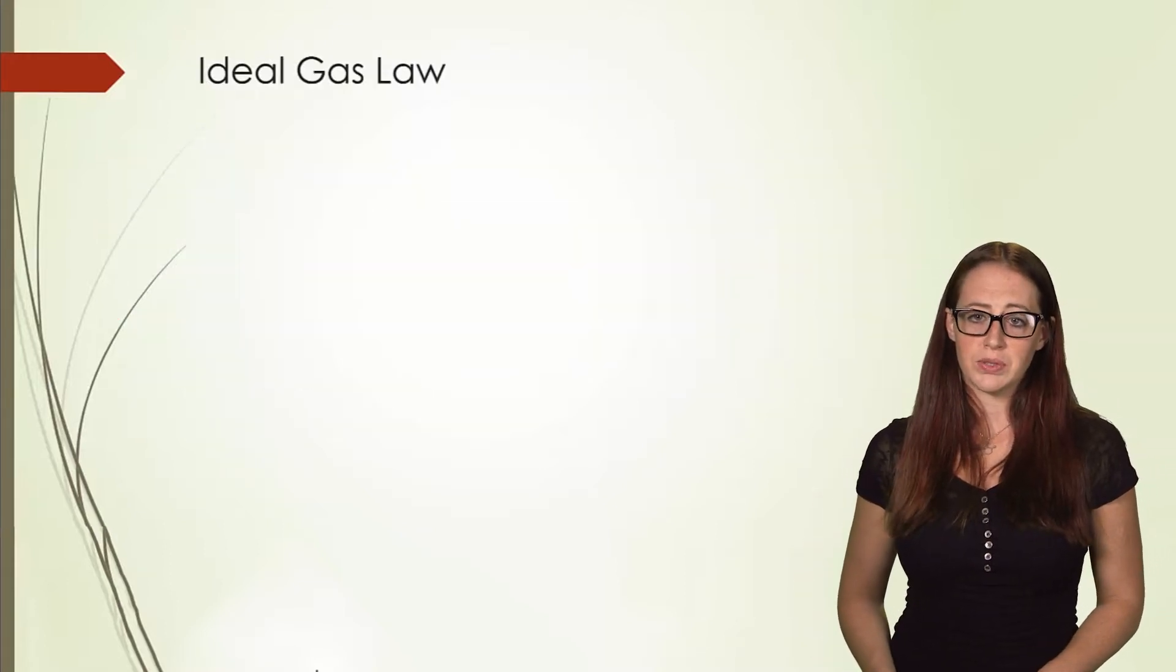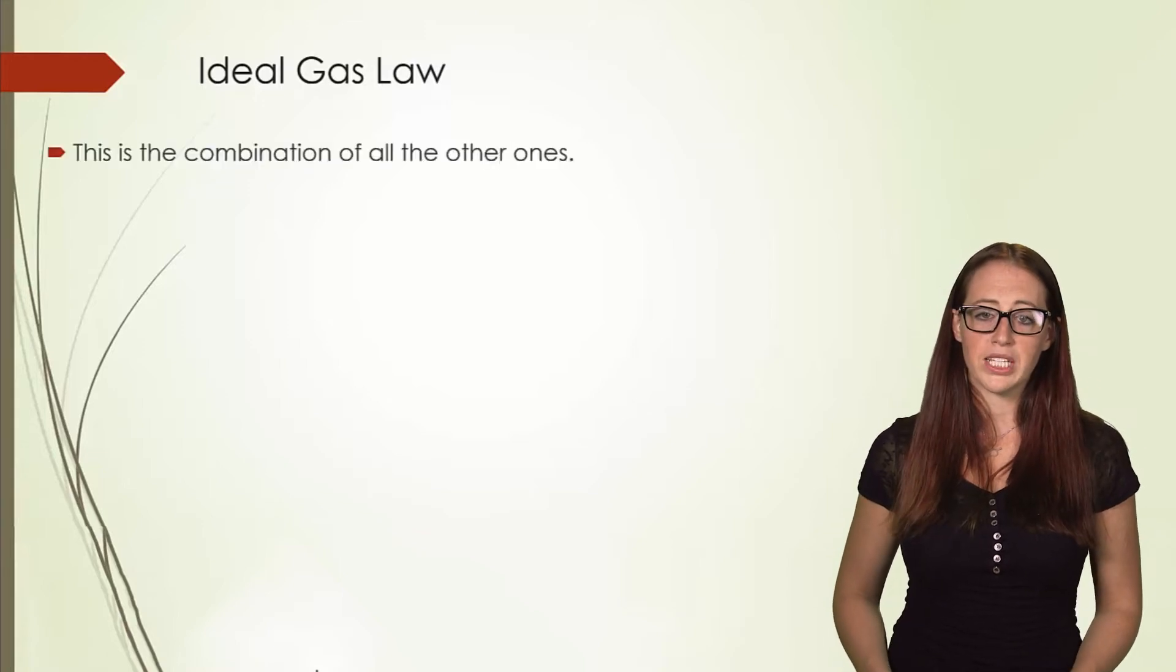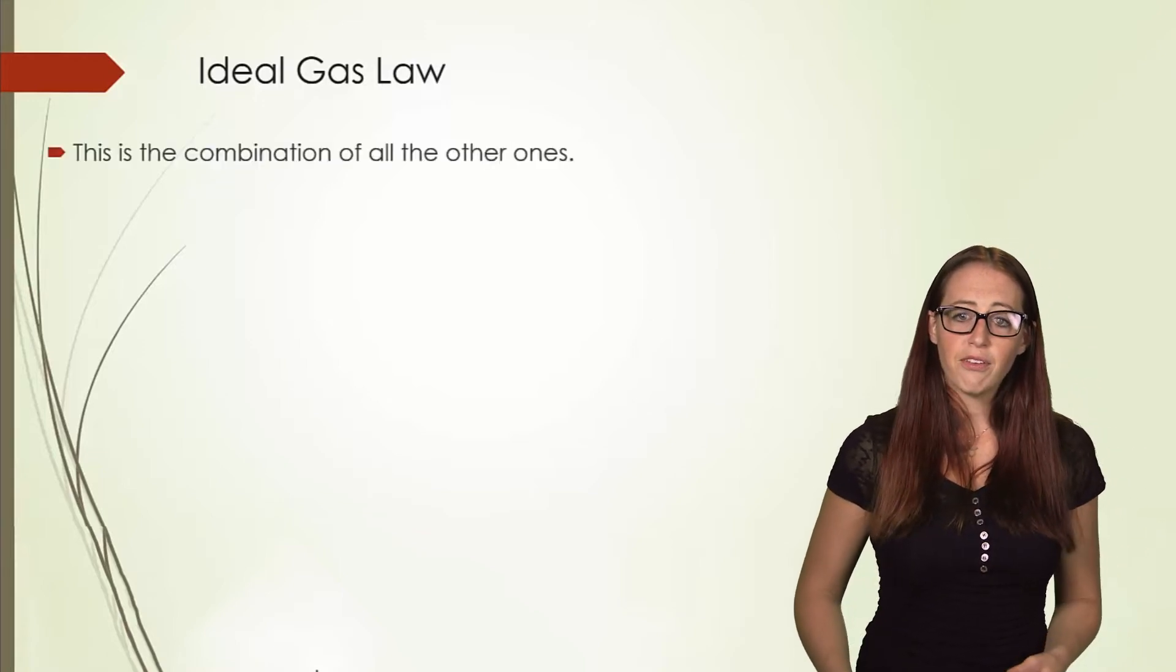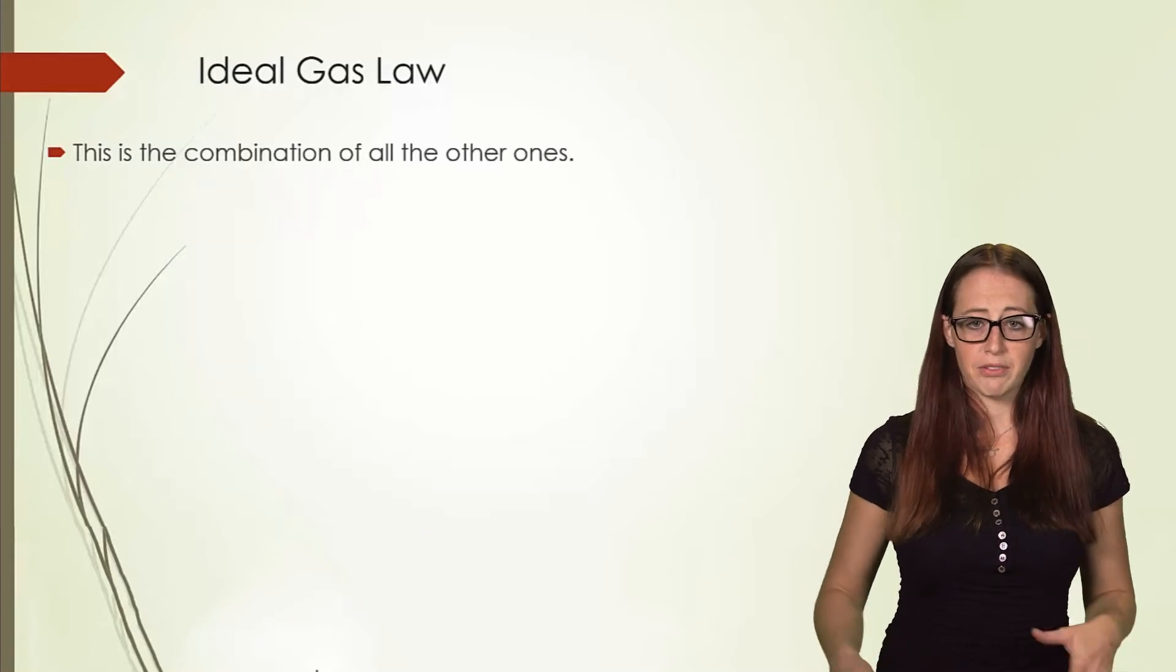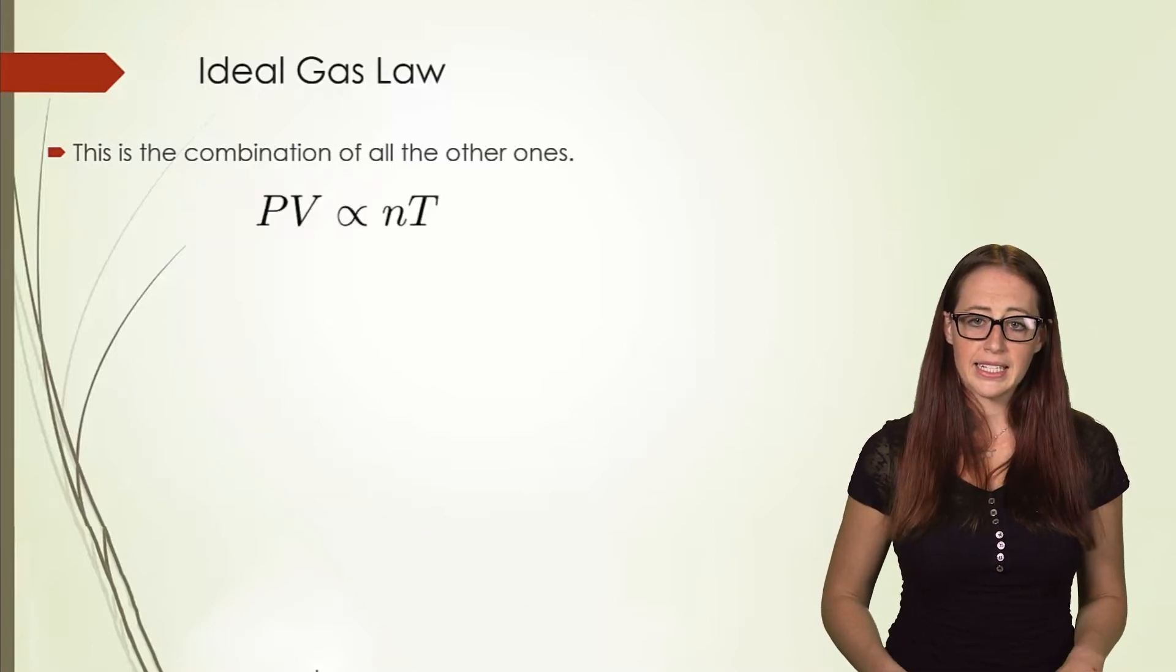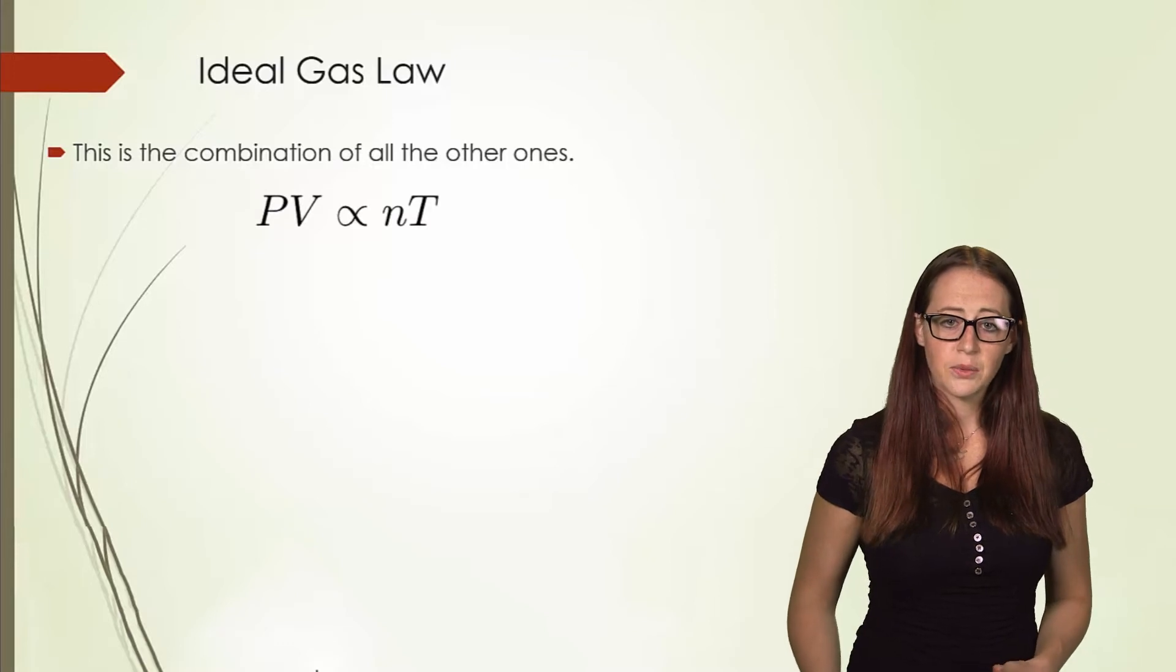Now that we have all the individual relationships, we can combine them into one equation. If we put P and V on one side in order to keep everything in the numerator, and n and T on the other side, we'd get this.